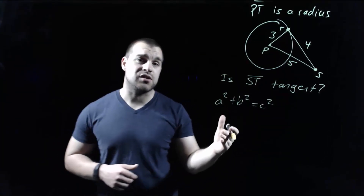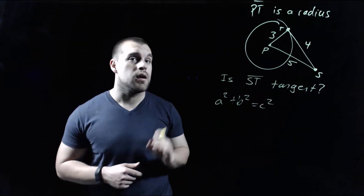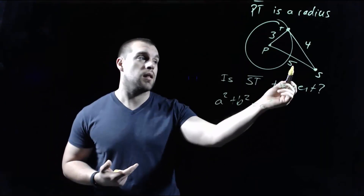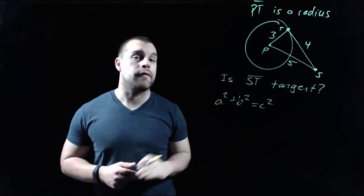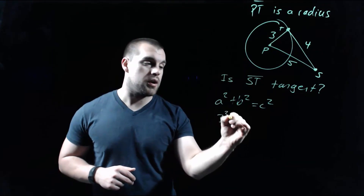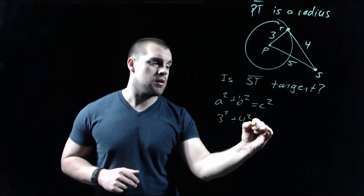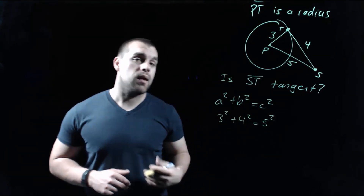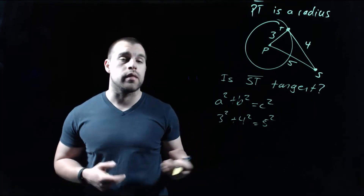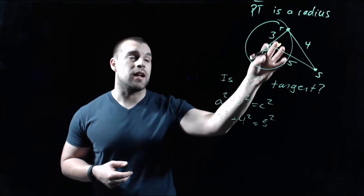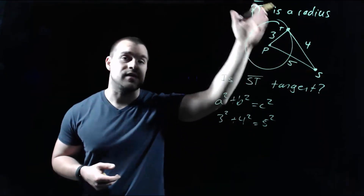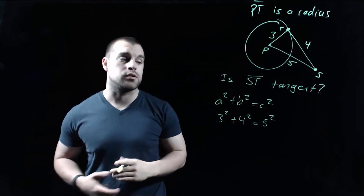Remember, the Pythagorean theorem is a² + b² = c², where c always has to be the biggest length — in this case it's 5. So the 3 and the 4 are the other lengths of our triangle. We go 3² + 4² = 5², and what we're hoping is that the number on the left-hand side equals the number on the right-hand side, which would tell us this is a right triangle.